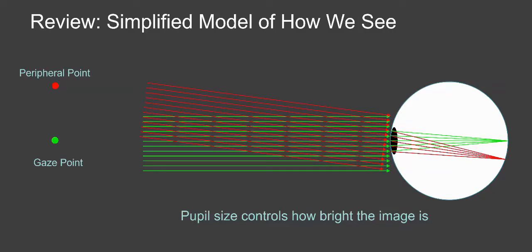So now this is just showing those rays. This green dot is your gaze point. The rays coming in parallel to that get focused to a point in the center of your fovea.